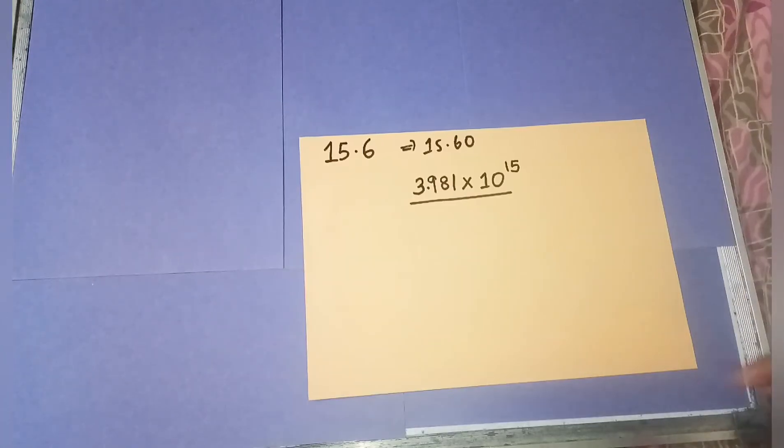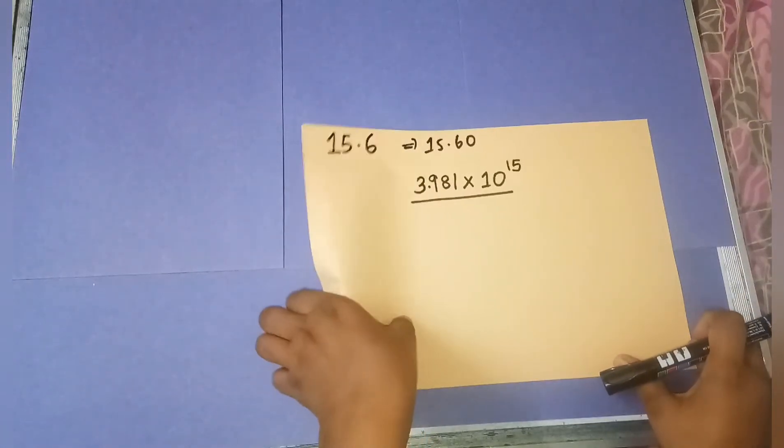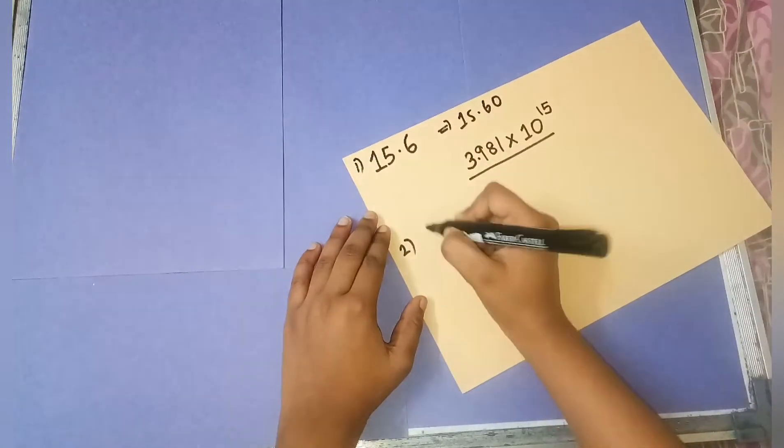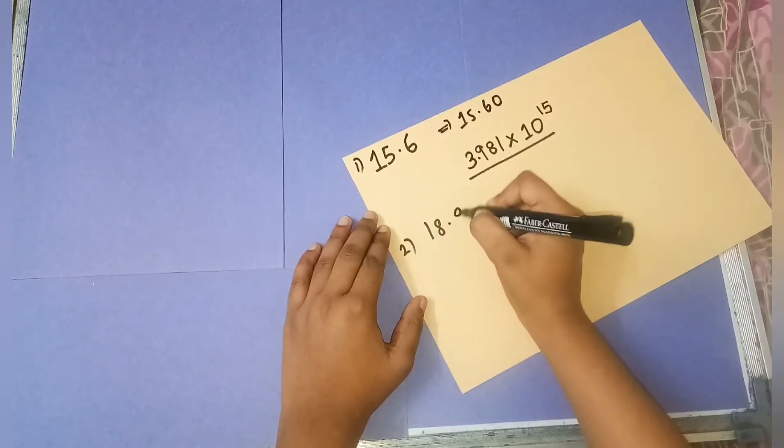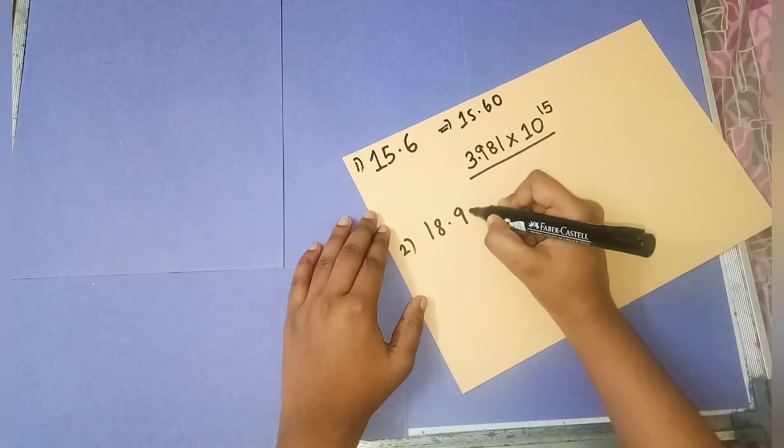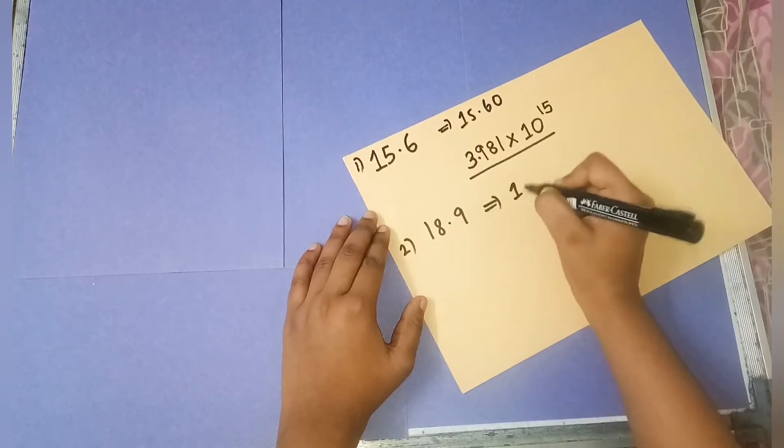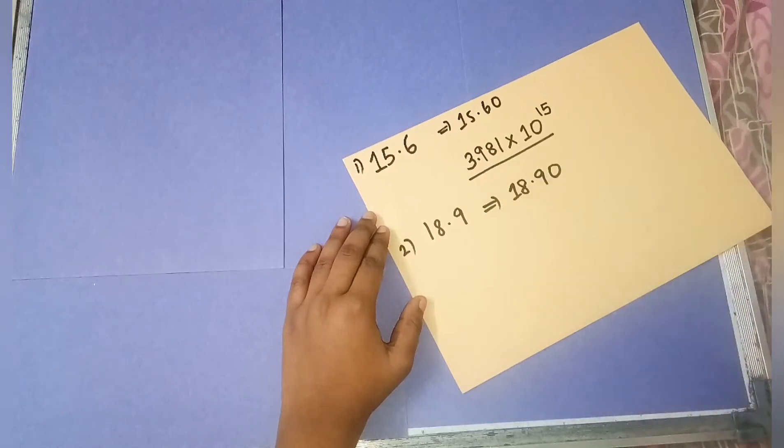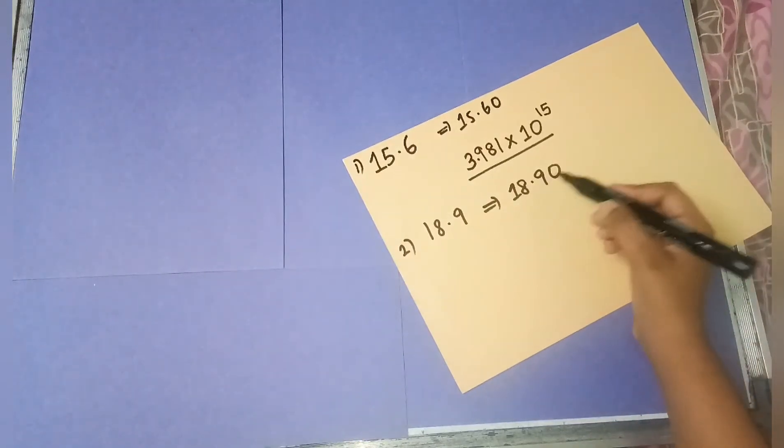To clearly understand this, let's take another example. Consider the number 18.9. If nothing is there, it becomes 18.90. Now, under the antilog page, you're going to find the value of 0.90.